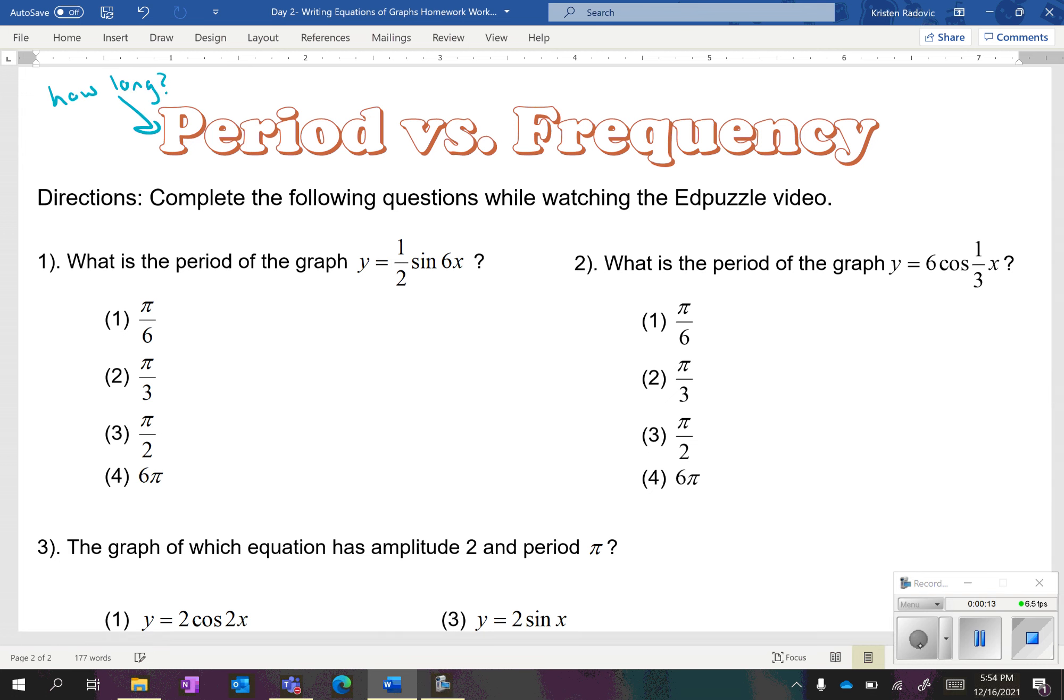And frequency means how many cycles, specifically from zero to two pi. We even have formulas to help us out with this. The formula to find your period is going to be two pi over the frequency. Your formula to find your frequency is two pi over the period.